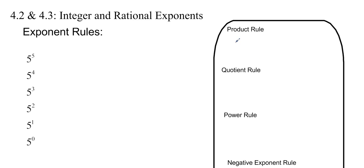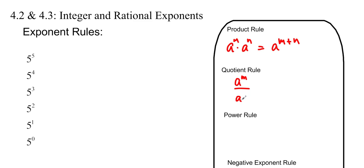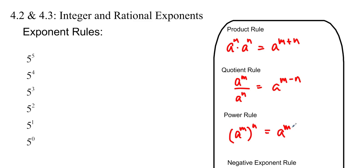The product rule is: a to the m times a to the n is equal to a to the m plus n. The quotient rule: a to the m over a to the n is equal to a to the m minus n. And the power rule: a to the m to the n is equal to a to the mn.